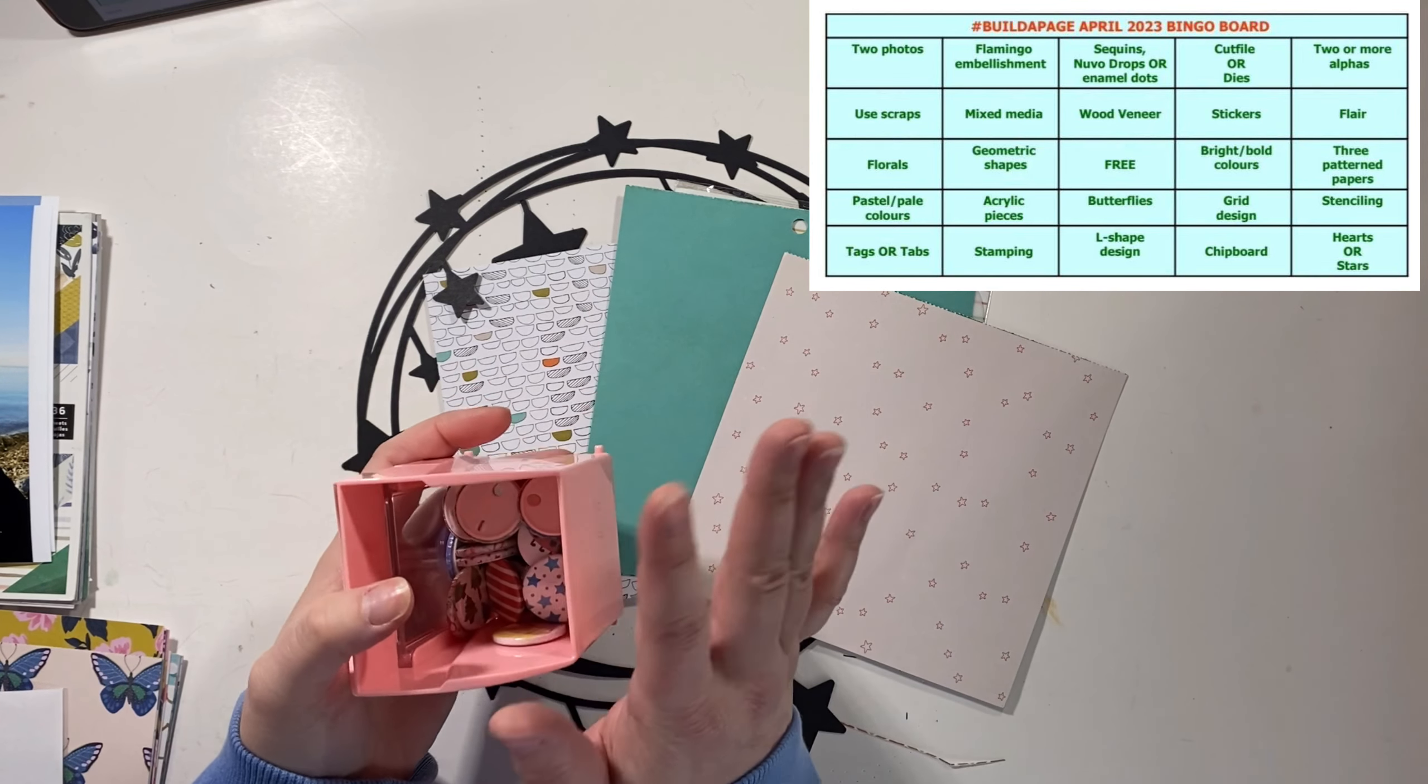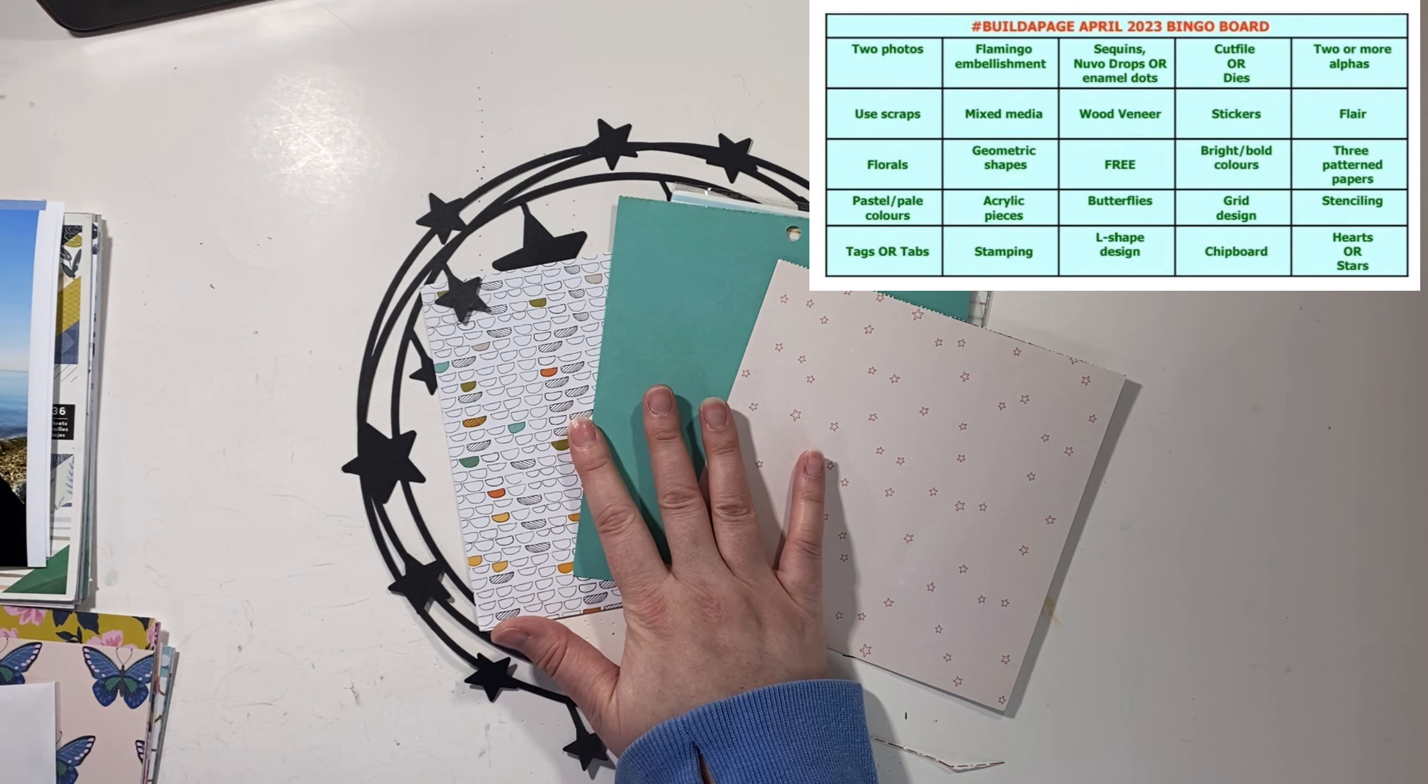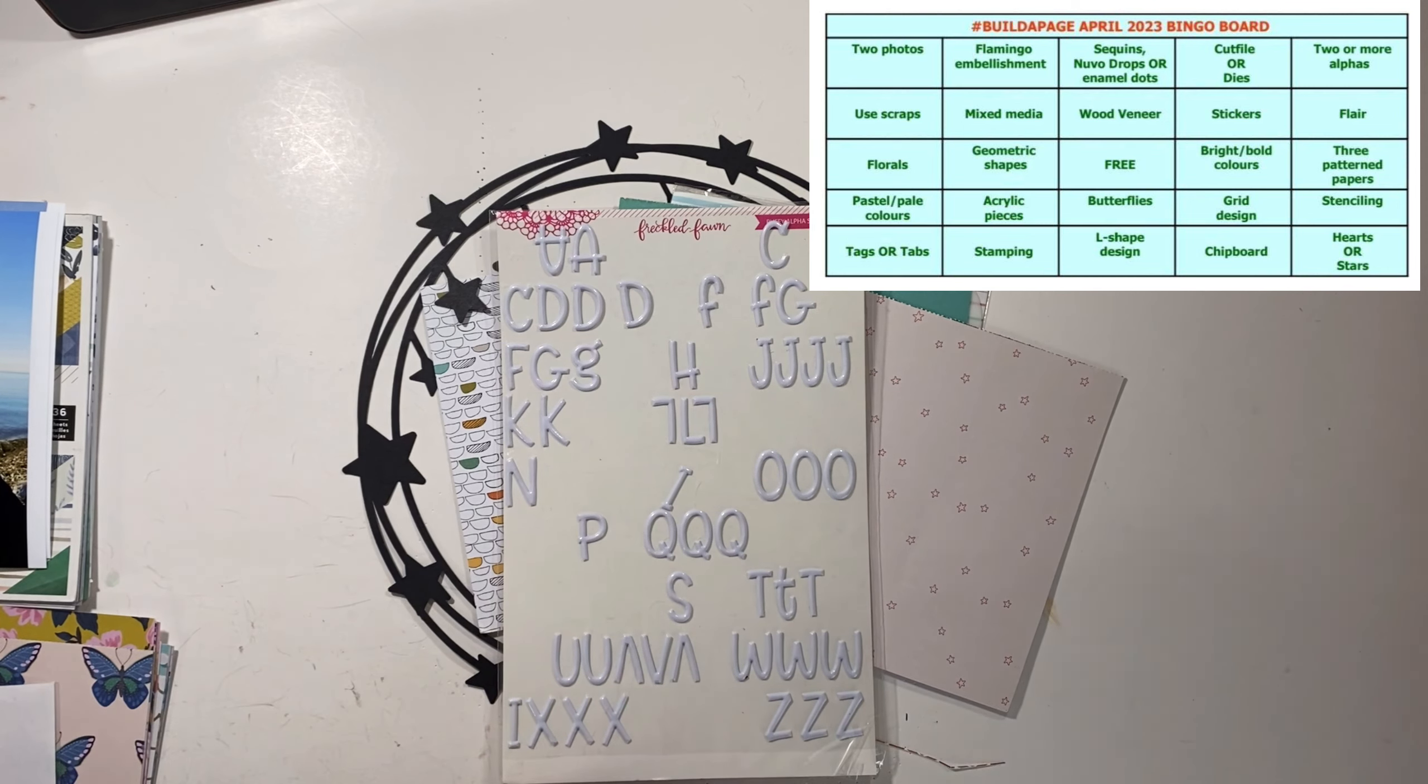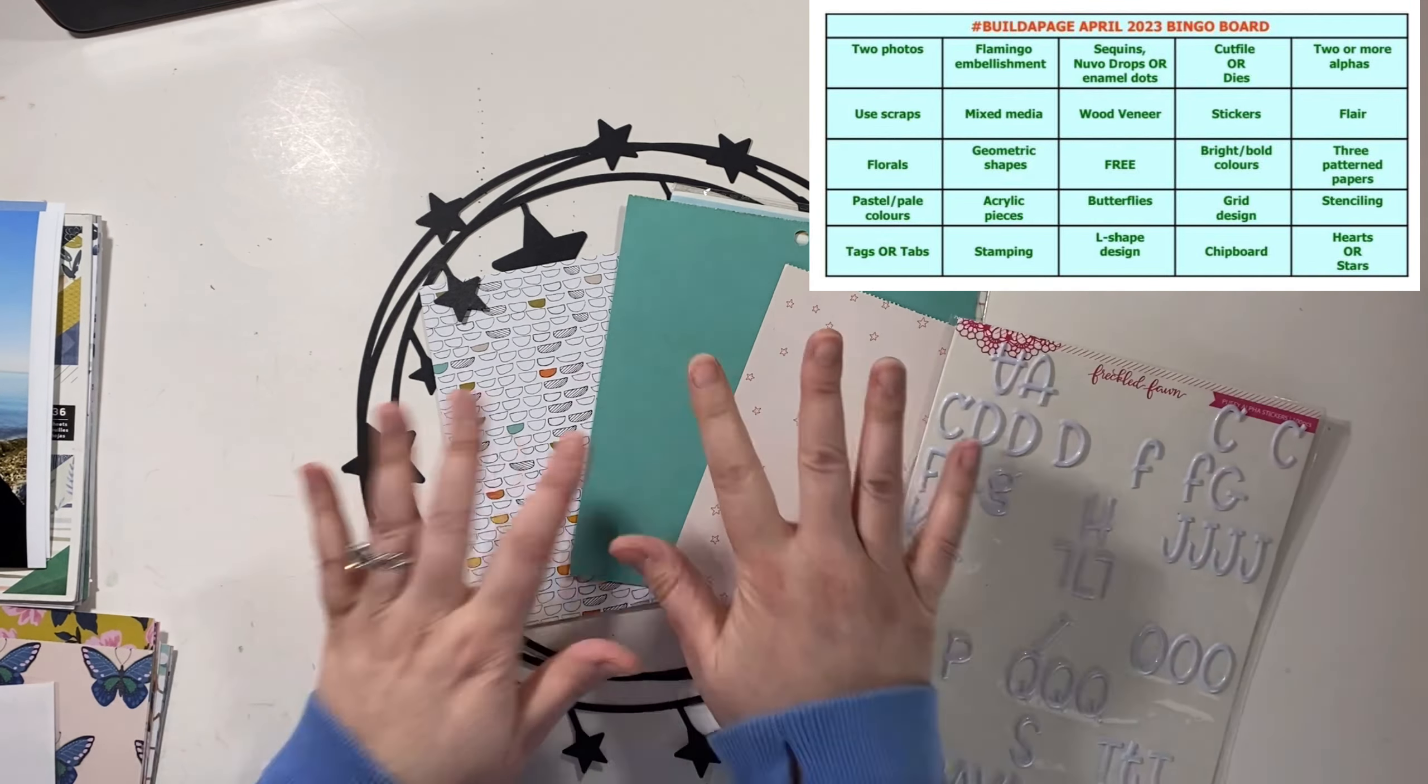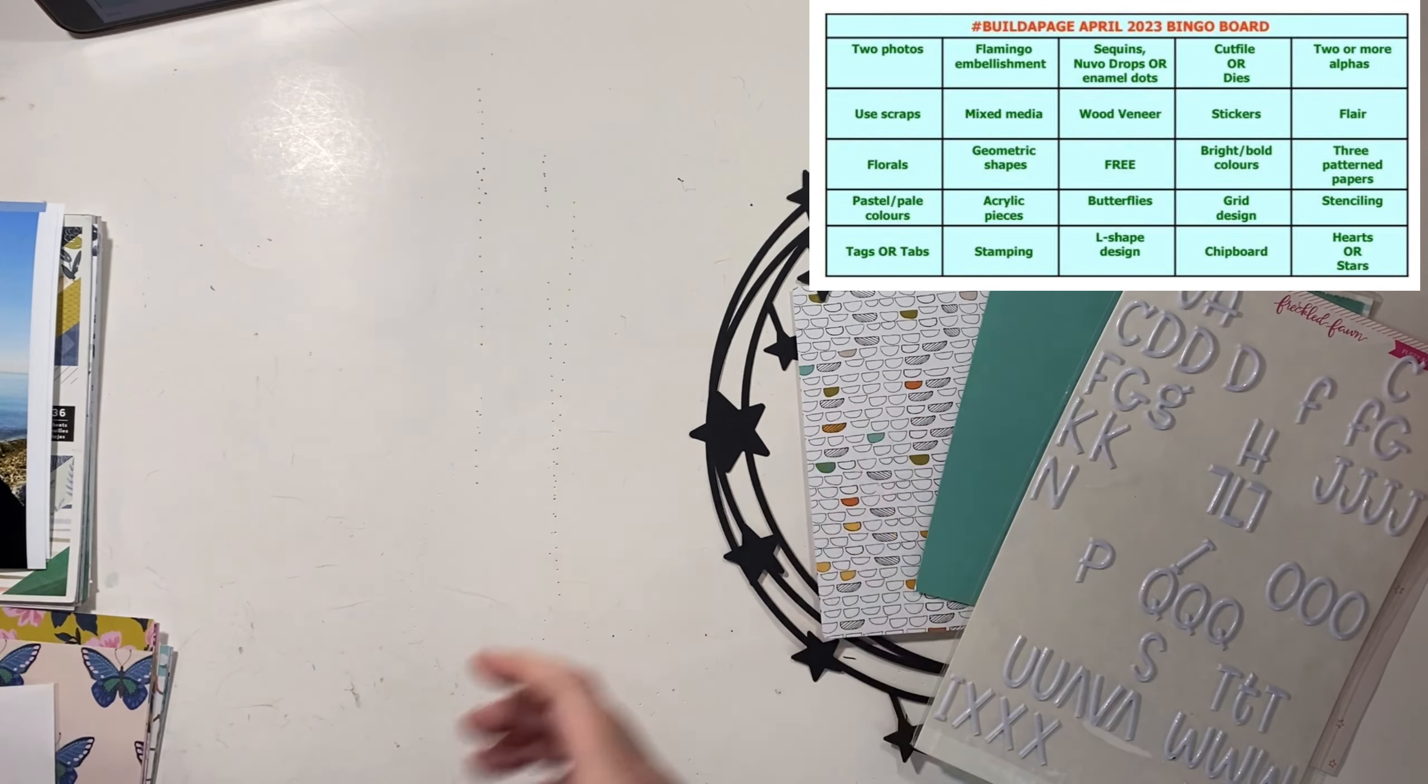This is all the flair I own. I don't own very much of it, but I do have this. So I will grab from my flair when it's time to create. And my alphas just sit right beside me, so I'll make sure to just grab enough alphas to make sure that I fit the challenge of two or more, which will be easy enough. So that is how I'm going to take on the last row. And I didn't again, I didn't grab any photos. I was more worried about making sure I had all the bits and pieces needed for the bingo board.